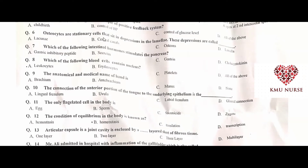Osteocytes are stationary cells that sit in a depression in the lamina; these depressions are called lacunae — A is the correct option. The intestinal hormone that stimulates the pancreas is secretin — B is the correct option.